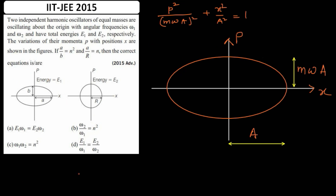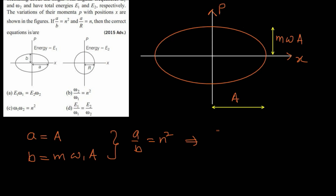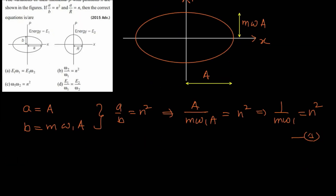In figure one, the semi-major axis is labeled 'a' (the amplitude) and the semi-minor axis is labeled 'b' equal to mω₁A. We are given that a/b = n². So: A/(mω₁A) = n², which gives 1/(mω₁) = n². This is equation one.